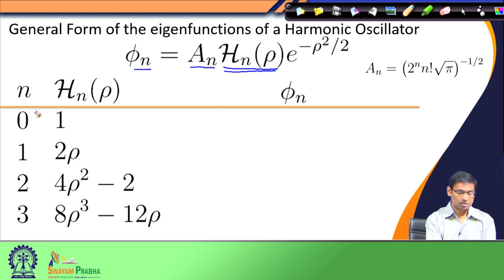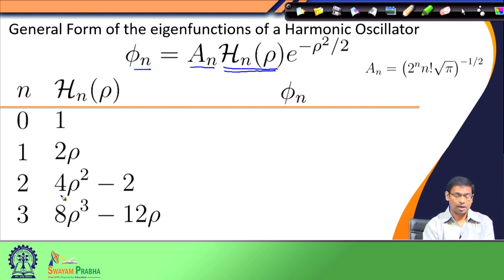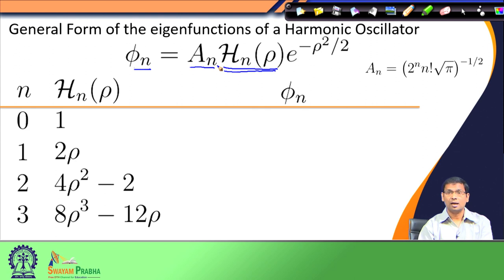The first few Hermite polynomials are: H_0 = 1, H_1 = 2*rho, H_2 = 4*rho^2 - 2, and so on. These Hermite polynomials are often found tabulated in many textbooks. The advantage of writing the harmonic oscillator eigenfunction in this format is that it is very easy to write down any eigenfunction corresponding to any value of n — we simply need the corresponding Hermite polynomial.